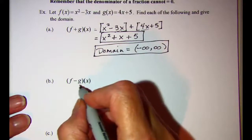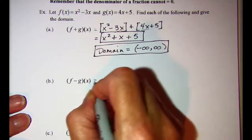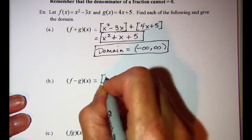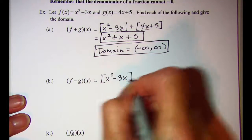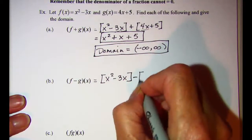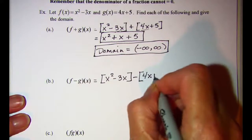For f minus g of x, we're going to take f of x, which is x squared minus 3x, and subtract g of x, which is 4x plus 5.